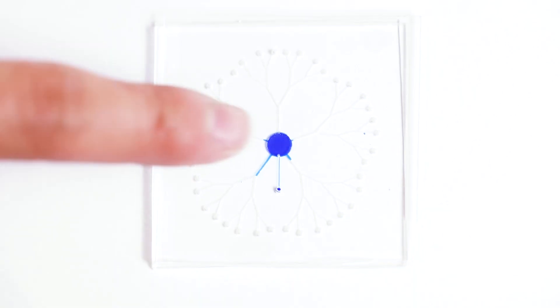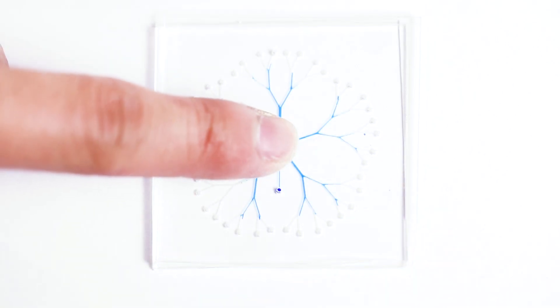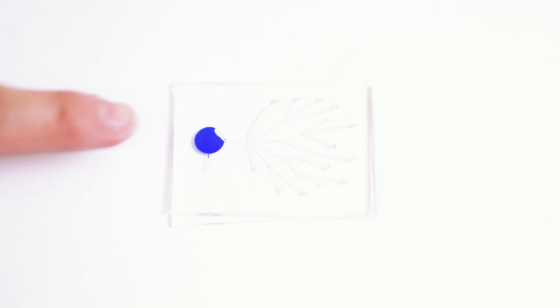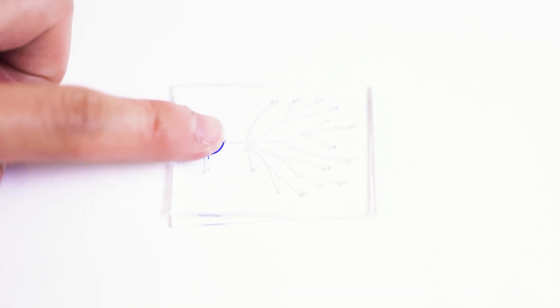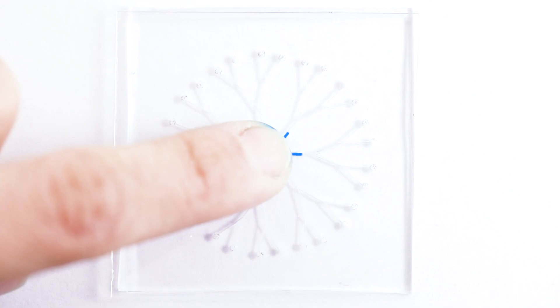Venus materials is inspired by vein systems, ubiquitous in nature and in the human body. By informing us of internal and external conditions, Venus materials can act as a new form of tangible interaction.